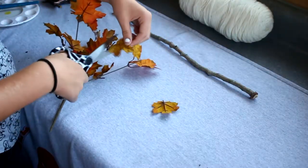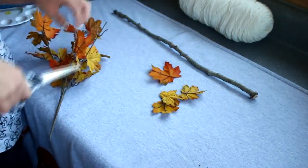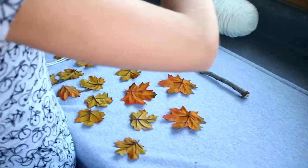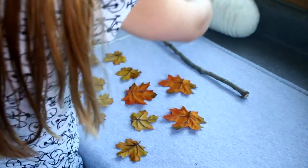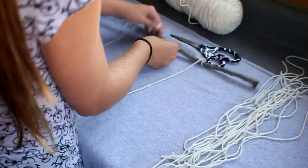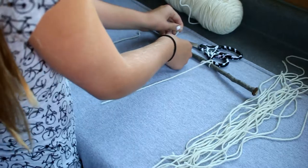For the next DIY, you just need fake leaves. I cut them off this little branch thing I have. Then I cut pieces of string around a foot or less in length - you can vary it. Then I tied the string to the stick I had.